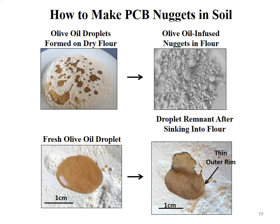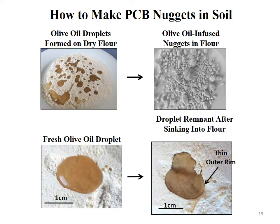A chemist working with us explained how these PCB tar balls likely formed: pour olive oil on dry flour and watch what happens. The olive oil beads up, then slowly sinks into the flour, sucking it in, with a thin light-colored rim of flour-rich material forming around the oil-saturated nugget. Sieve the flour afterward and you get individual olive oil-infused nuggets. Similarly, if someone dumped PCB oil into soil, these nuggets form throughout. Taking random discrete samples would yield very high concentrations in some and none in others, depending purely on whether a nugget is in your subsample.